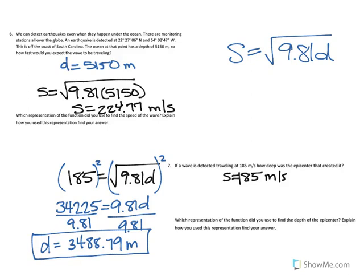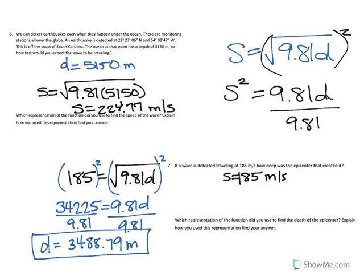Another way that we could have solved that was to look at our original function and solve for D by squaring the function originally, which would have given us S squared equals 9.81D. Then we could have divided by the 9.81, so rather than solving when we had numbers in, we would just have plugged in our value for S and gone straight to solving the function. That sums up your lesson one from unit six.